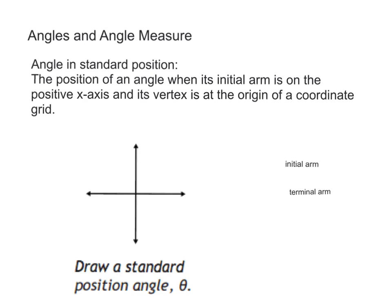When we're talking about angles now, we're going to be talking about angles in standard position on a coordinate system. The position of an angle, an angle in standard position is an angle that has its initial arm on the positive x-axis.